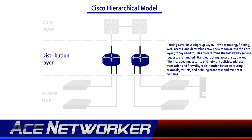The second layer is the distribution layer, also called the routing layer, and over the years it has also been referred to as the work group layer. It is the communication between the core layer and the access layer. The distribution layer provides routing, filtering, WAN access, and determines how packets can access the core layer. It has to determine the fastest way network service requests are handled. After determining the best path, it forwards the request to the core layer, which then forwards the request to the correct service.